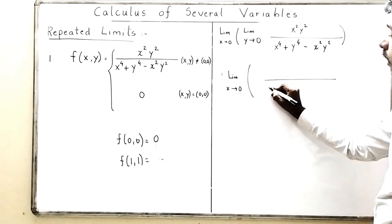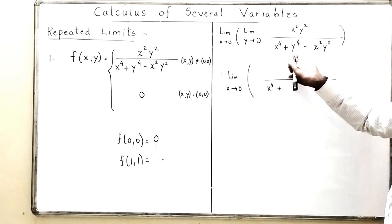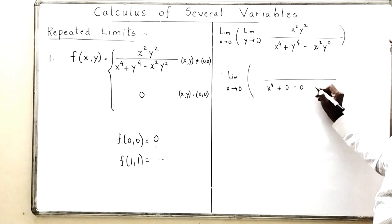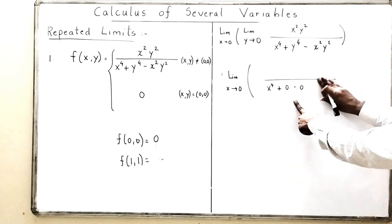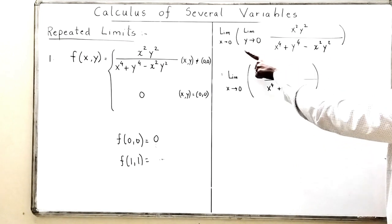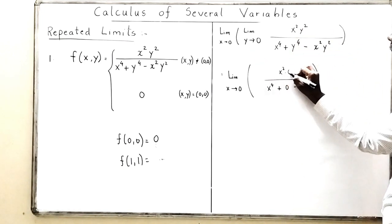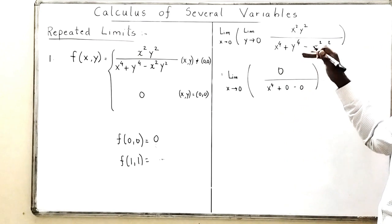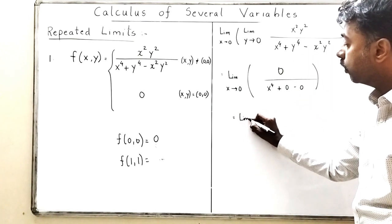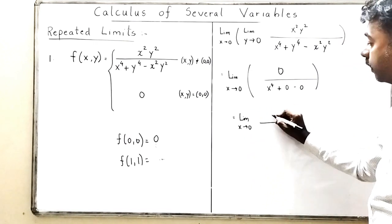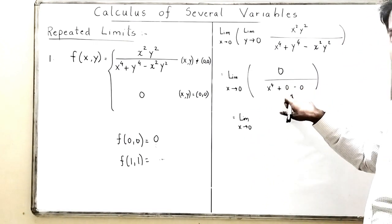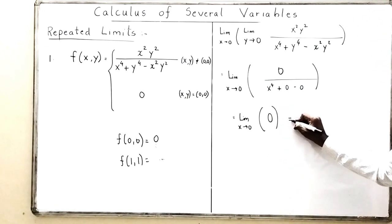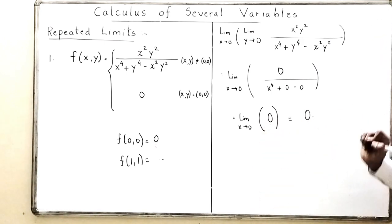After putting y = 0, the denominator is x⁴ + 0 + 0 = x⁴, and the numerator is 0. So the fraction is 0/something = 0. The outer limit as x → 0 of 0 is just 0. So the first repeated limit equals 0.